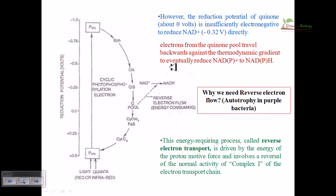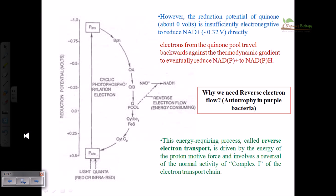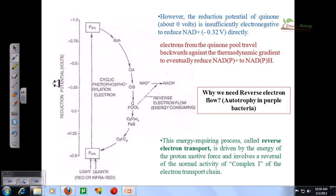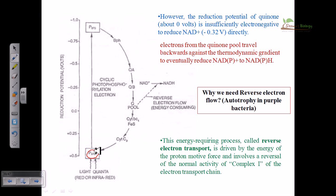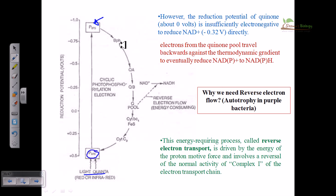Welcome back friends. In this video we will be talking about reverse electron flow and why we at all need it. Inside the photosystem of purple bacteria we have seen the photosynthesis light reaction. They have photosystem 870, which is excited by a photon of light and moves to the excited state. The electron in the excited state is transferred through several rounds of electron carrier molecules — including cytochrome c2, quinones, cytochrome bc1, and bacteriochlorophyll — and finally returns to the ground state in a cyclic process.